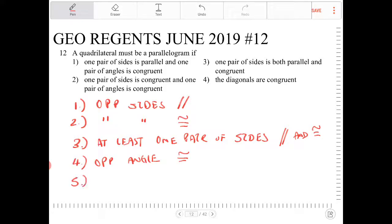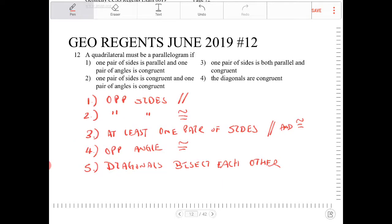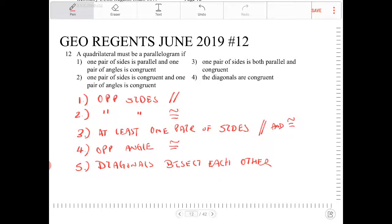Five, if the diagonals bisect each other. And I believe that's it. So the diagonals are bisecting each other. These are the five main reasons why a quadrilateral is a parallelogram.